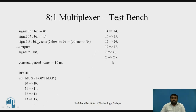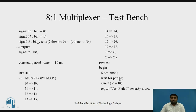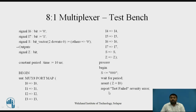Once component instantiation is done, write the process — process begin. Here we write all the test cases. For the first case, S is assigned all zeros (000). We wait for the period constant, which is 10 nanoseconds. After that, we use an assert statement to check the Boolean condition.